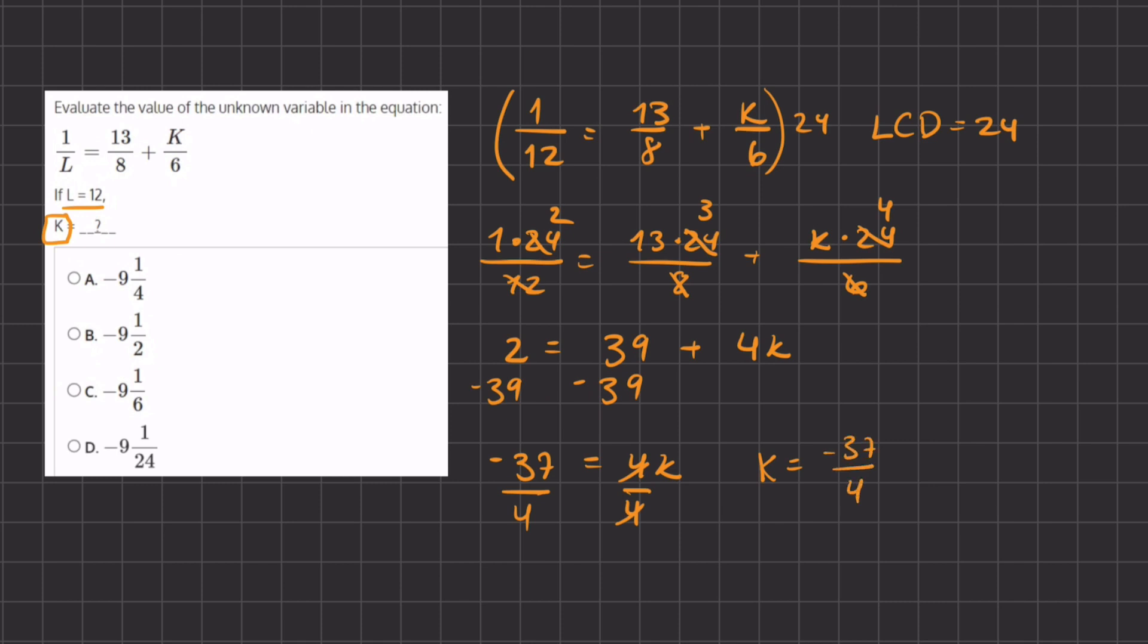All of our answers are written as mixed numbers. So we want to convert this improper fraction into a mixed number. We're going to ask ourselves, how many times does 4 go into 37?